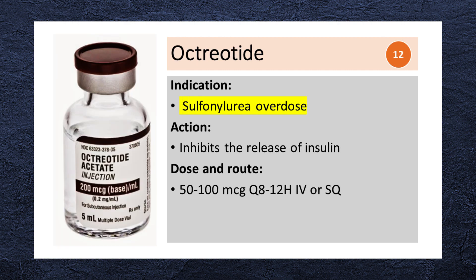Octreotide is used in cases of sulfonylurea overdose to control hypoglycemia. It prevents rebound hypoglycemia after treatment of sulfonylurea overdose with dextrose. It can be administered subcutaneously or intravenously at a dose of 50 to 100 mcg every 8 to 12 hours.